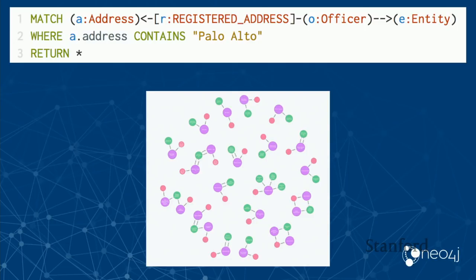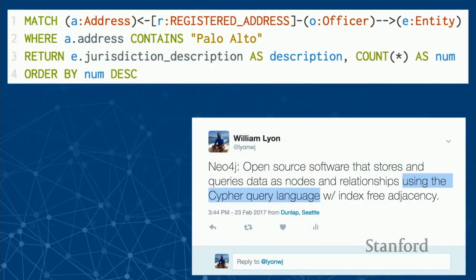We can explore the data visually as a graph and see a few more connected clusters that might be interesting to explore. But sometimes the answer to our question is the result of an aggregation — not graph data, just tabular data. Here's a slightly different version of that query, this time doing a group-by on jurisdiction. We're asking: for everyone with an address in Palo Alto who has an offshore company in the Paradise Papers, what are the most popular offshore jurisdictions they used?